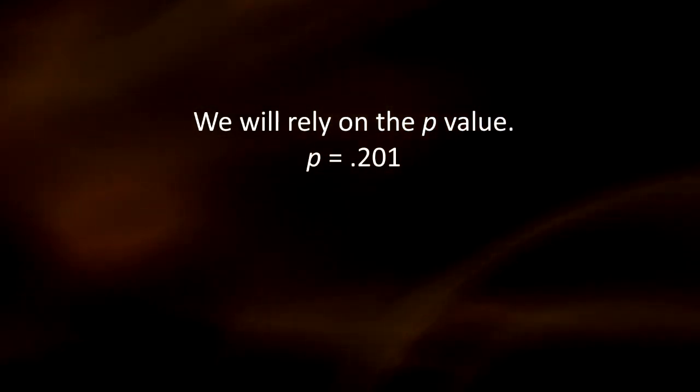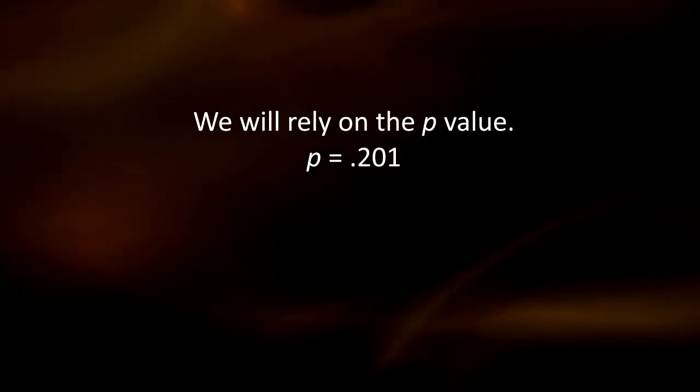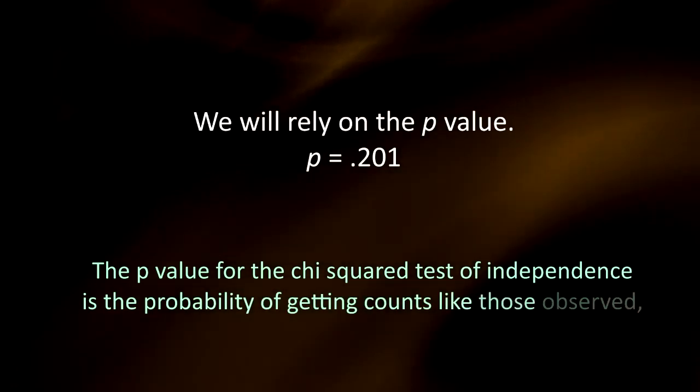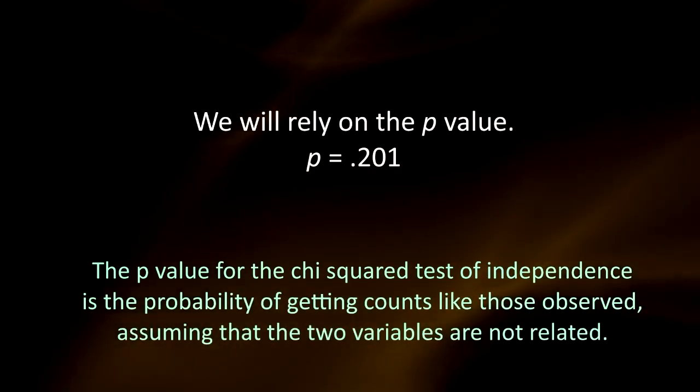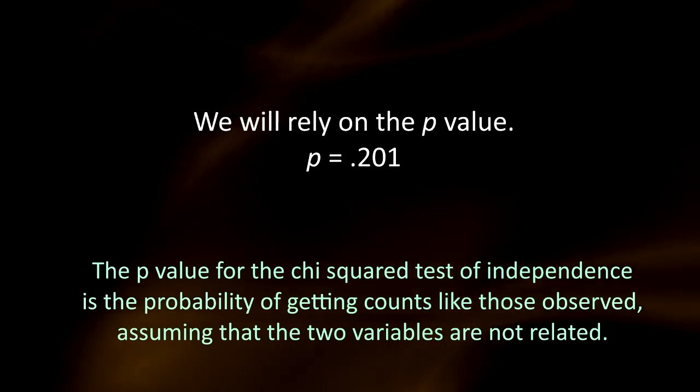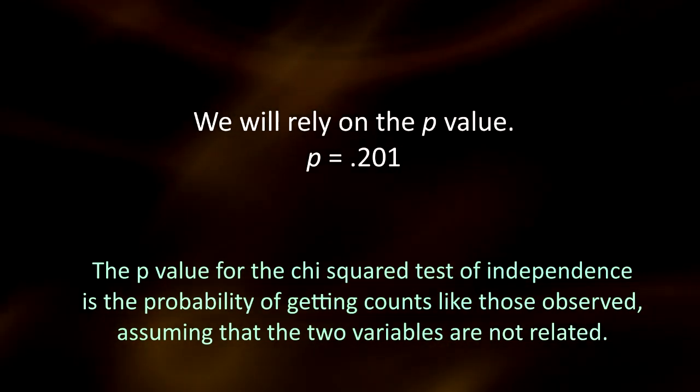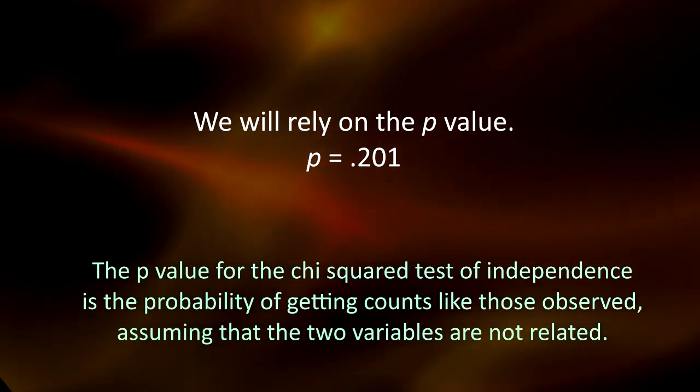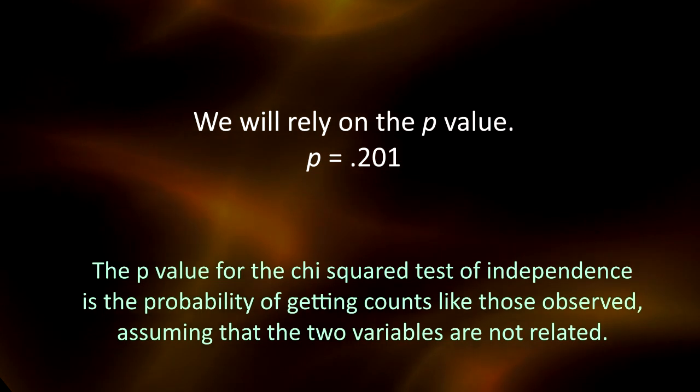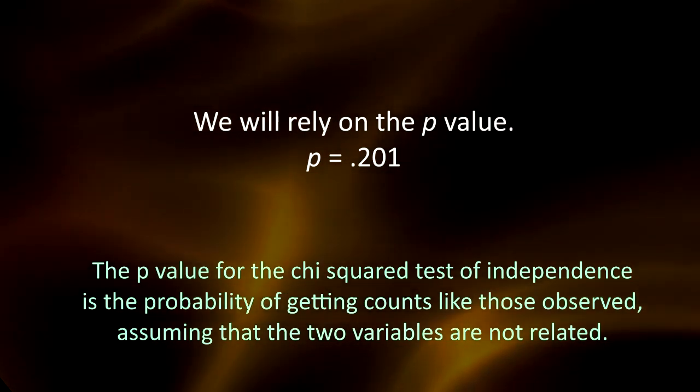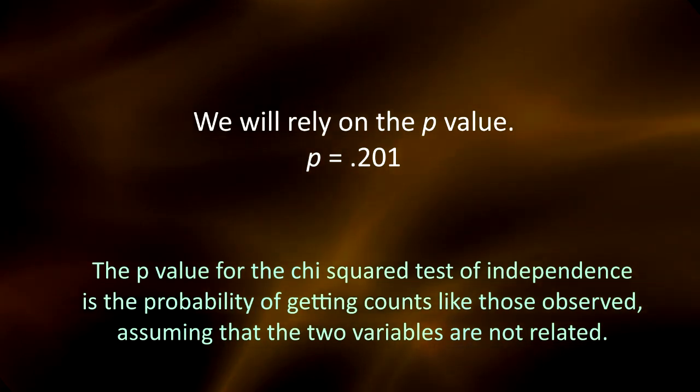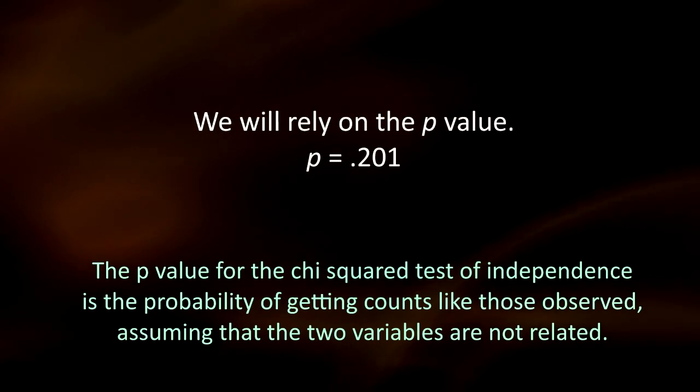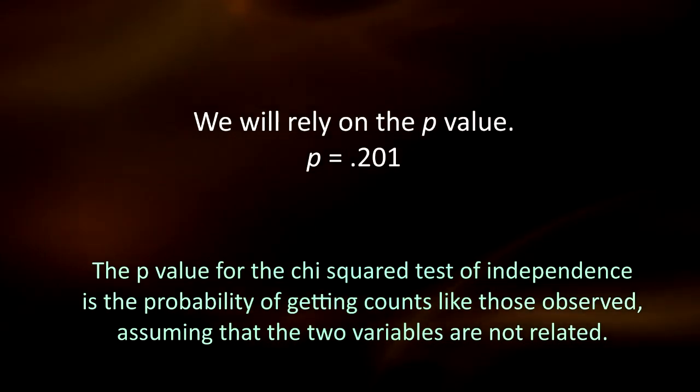The p-value for the chi-square test of independence is the probability of getting counts like those observed, assuming that the two variables are not related, which is what is claimed by the null hypothesis. The smaller the p-value, the more surprising it would be to get counts like we did if the null hypothesis were true. Technically, the p-value is the probability of observing a chi-square at least as large as the one observed. Using our statistical software, we'll find that the p-value for this test is 0.201.